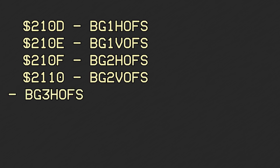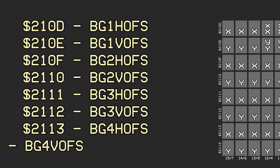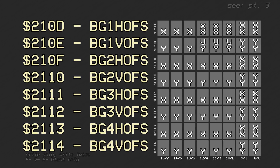PPU registers 0x210D through 0x2114 are the horizontal and vertical background scroll registers. These are all write-twice registers in the order of lower 8 bits and upper 2 or 5 bits, since the maximum scroll value is more than 8 bits — 10 bits for large backgrounds in modes 0 through 6, and 13 bits for a mode 7 background.